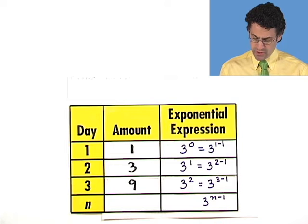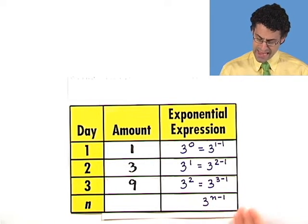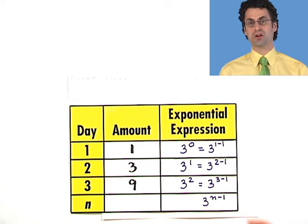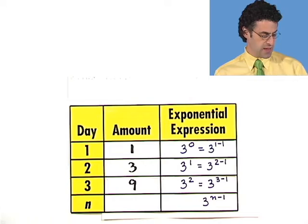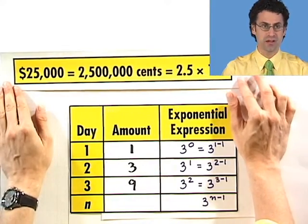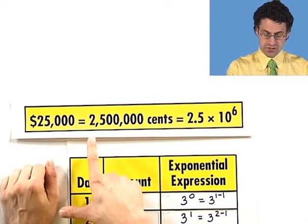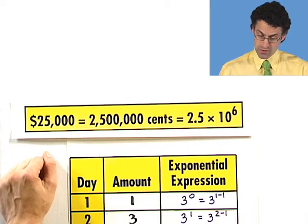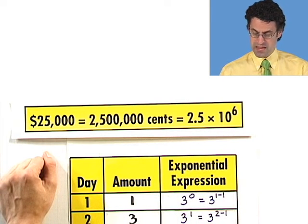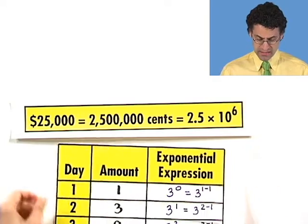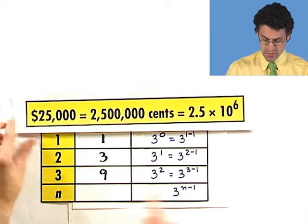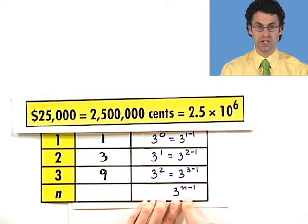All right. Well, now our mission is clear. What we want to do is we want to see for what value of n will this value exceed the value of the car? Well, how can I do that? Well, the value of the car is $25,000. On day n, I'm getting three to the n minus one cents. So the first thing I've got to do is correctly figure out how many cents there are in the value of that car. Well, that's pretty easy to do because we know that 100 cents make up $1. And so what I see here is that $25,000 is the same thing as two and a half million cents. That's a lot of cents. Or in scientific notation, 2.5 times 10 to the 6.